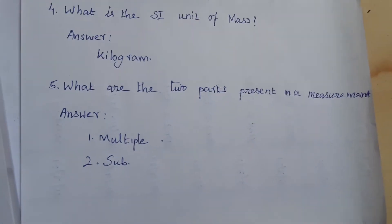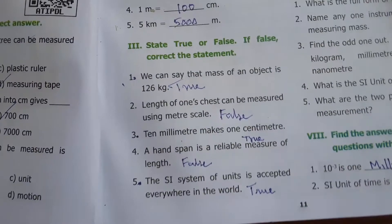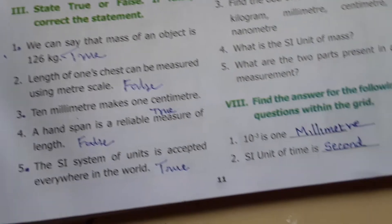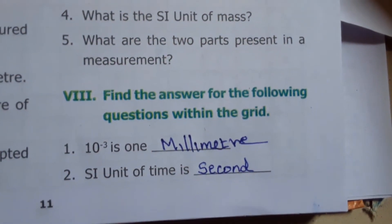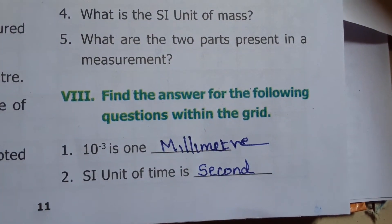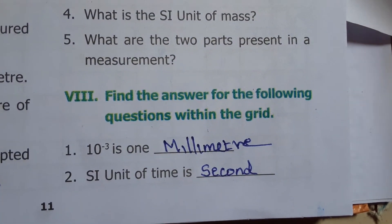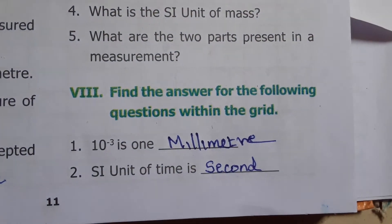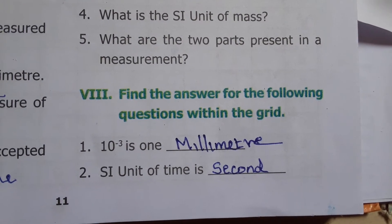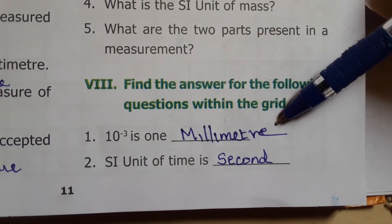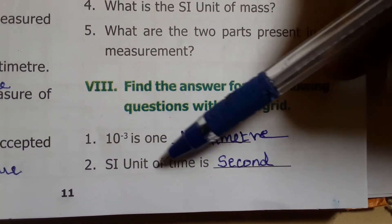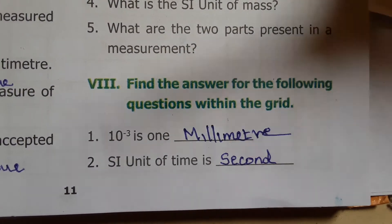In the grid, 10 to the power of minus 3 is equal to milli. The SI unit of time is second.